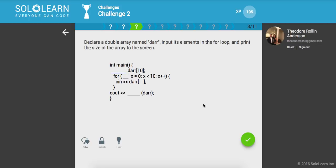To declare a double array named dar, okay. So we'll say double dar, and print the size of the array to the screen. So we'll say for int x equals zero, and dar of x. Let's go ahead and print size of dar. Awesome.